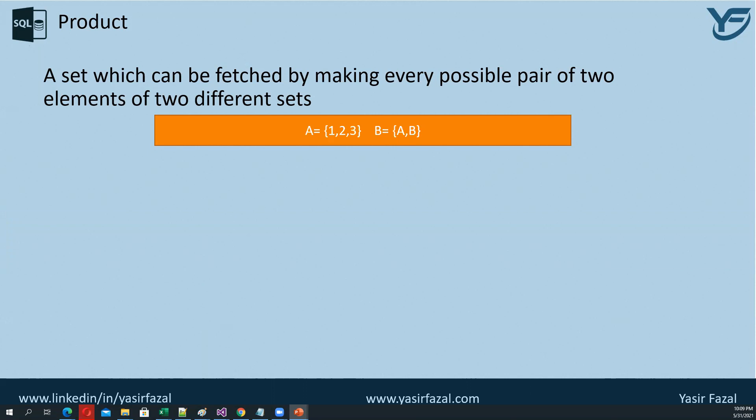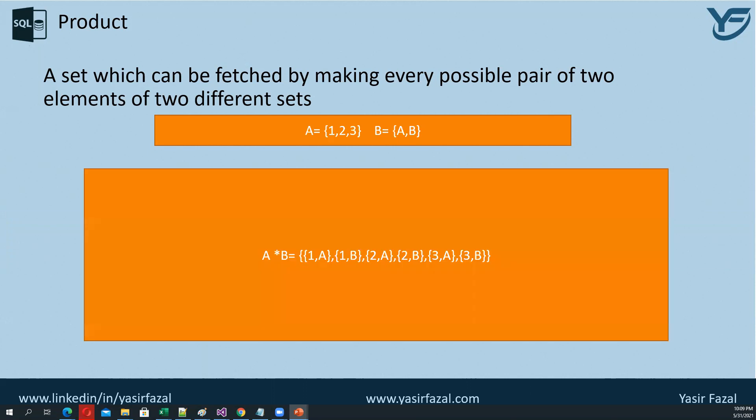So if I say A Cartesian B, or A multiply B, it means (1,a), (1,b), (2,a), (2,b), (3,a), (3,b) are basically the Cartesian product of two sets which are A and B.